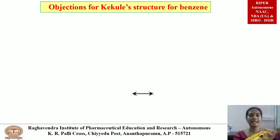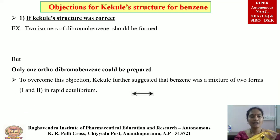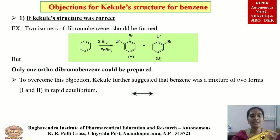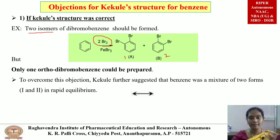There are objections to Kekule's structure, mainly two. The first objection: if Kekule's structure were correct, two isomers of orthodibromobenzene should form. When benzene reacts with two moles of bromine in the presence of FeBr3, it should give two isomers (A and B). But in practice, only one orthodibromobenzene is obtained. This objection was overcome by Kekule's additional point.